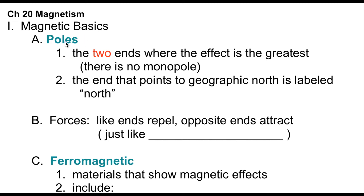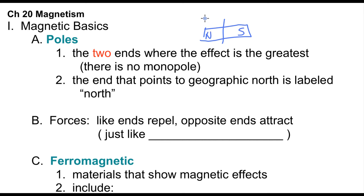Our first term is poles — the two ends of a magnet where the effect is greatest. There's no such thing as a monopole. If you have a magnet with a north and south end and you cut it in half, you don't get just a north end and a south end — you get two mini magnets, each with their own north and south end.